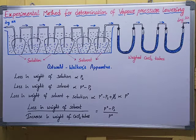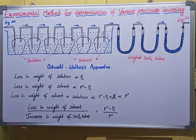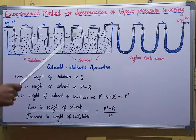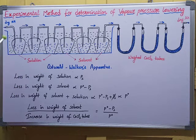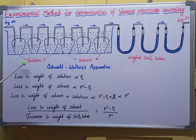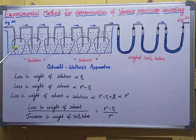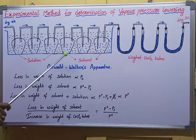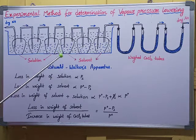In today's class I'll explain the experimental procedure for the determination of relative lowering of vapor pressure. This method is called Ostwald's Walker's method. The Ostwald's Walker's apparatus consists of three bulbs which contain a large amount of solution with a non-volatile solute — non-volatile meaning it is non-evaporative in nature. The next three bulbs consist of pure solvent only, which you can consider as water.